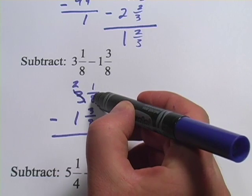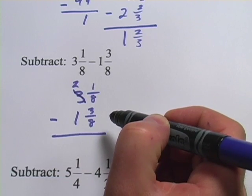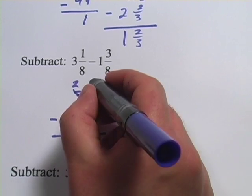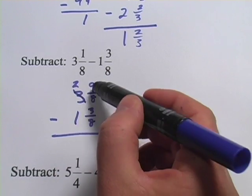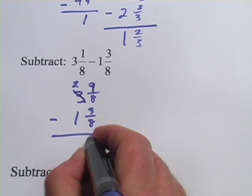That one I bring over here, since we're in eighths, it's going to be eight-eighths. So this becomes nine-eighths. One-eighth plus eight-eighths is nine-eighths. And nine-eighths minus three-eighths, well, that's easy. That's six-eighths.